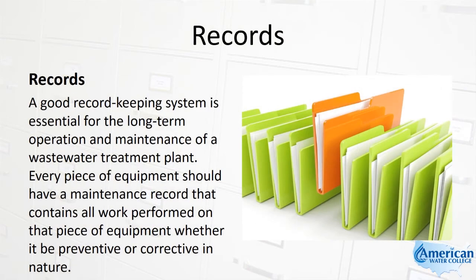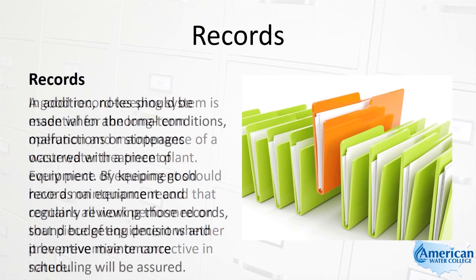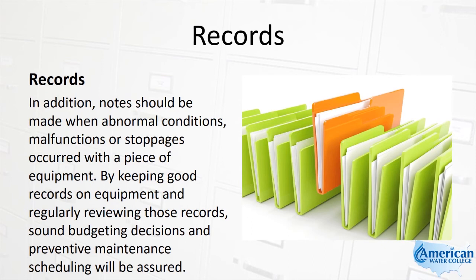A good record-keeping system is essential for the long-term operation and maintenance of a wastewater treatment plant. Every piece of equipment should have a maintenance record that contains all work performed on that piece of equipment, whether it be preventive or corrective in nature. Notes should be made when abnormal conditions, malfunctions, or stoppages occurred with a piece of equipment.